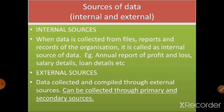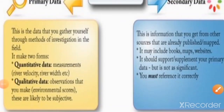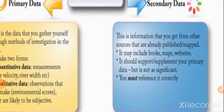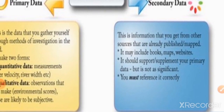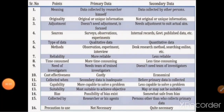The next one is external sources — data collected from outside the organization. External sources can be collected in two ways: primary data and secondary data. Primary data means collecting the information by ourselves using the investigation method. Primary data will be in two forms: quantitative data and qualitative data. In the case of secondary data, the information is obtained from other sources such as newspapers, websites, or other books.